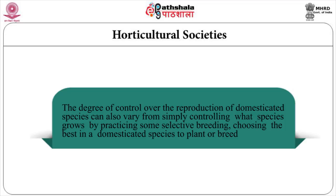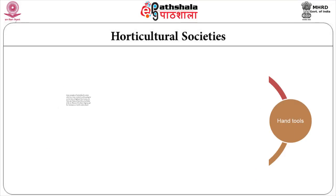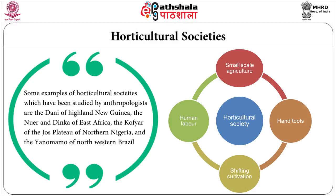The degree of control over reproduction of domesticated species can vary from simply controlling what species grows to practicing selective breeding, choosing the best individuals for planting and breeding. The less intensive the cultivation, the more likely rights to cultivate plots can be redistributed among families by clan elders. Some examples of horticultural societies studied by anthropologists are the Dani of Highland New Guinea, the Nuer and the Dinka of East Africa, the Kofyar of the Jos Plateau of Northern Nigeria, and the Yanomami of Northwestern Brazil.